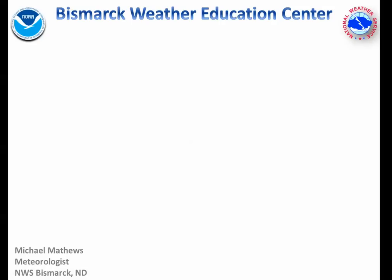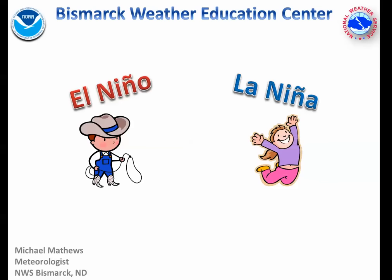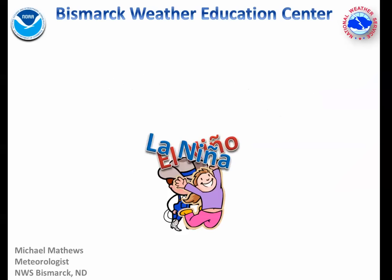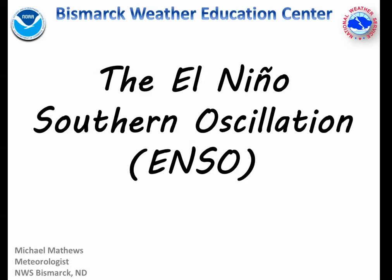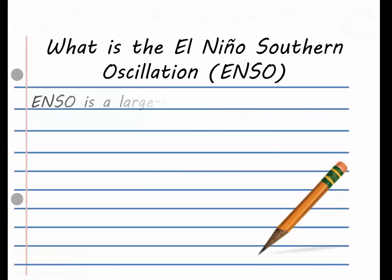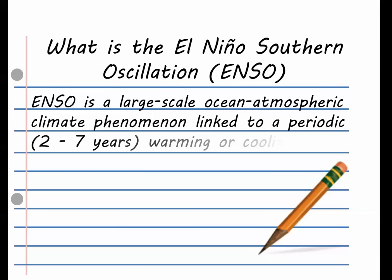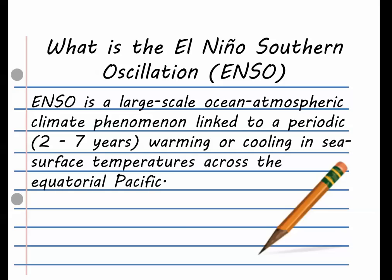Hello and thanks for joining me for the Bismarck Weather Education Center's video on the El Niño Southern Oscillation. Many of you have probably heard about El Niño and even La Niña, but did you know they are simply parts of the El Niño Southern Oscillation, or ENSO? You can read an official definition of ENSO, but most importantly remember three key things: ENSO is a relationship between the ocean and the atmosphere, it occurs because of periodic warming or cooling of sea surface temperatures, and it happens over the equatorial Pacific.